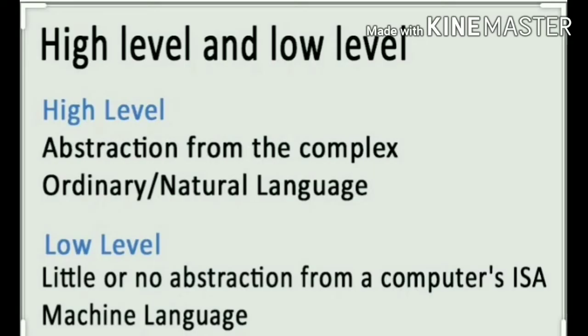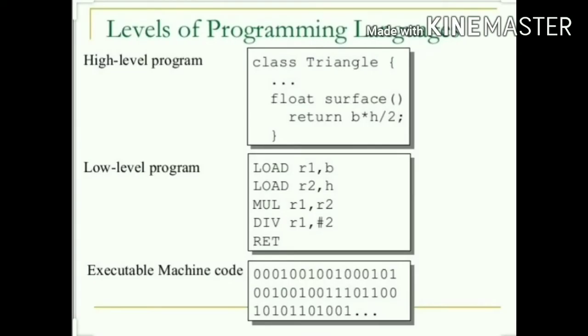High Level Languages are easy for the programmers to write and test. These languages use letter words and mathematical symbols as are used in human language. High Level Languages are not machine dependent — once the program is written, it can be used on different computers. Programs written in high level language need to be converted into machine code by using either a compiler or an interpreter.